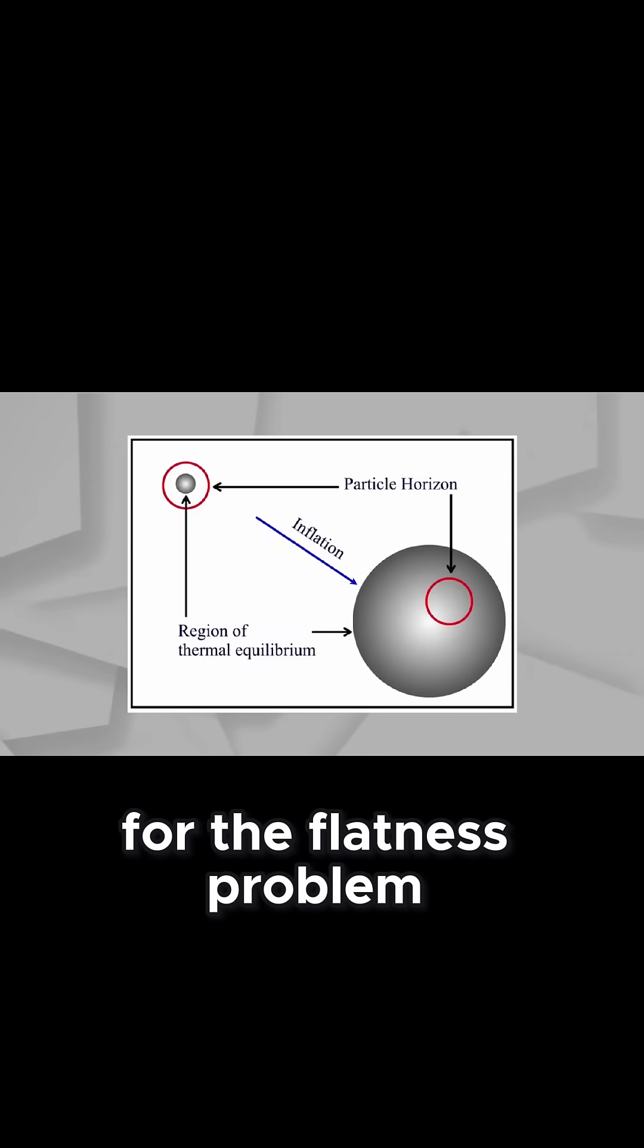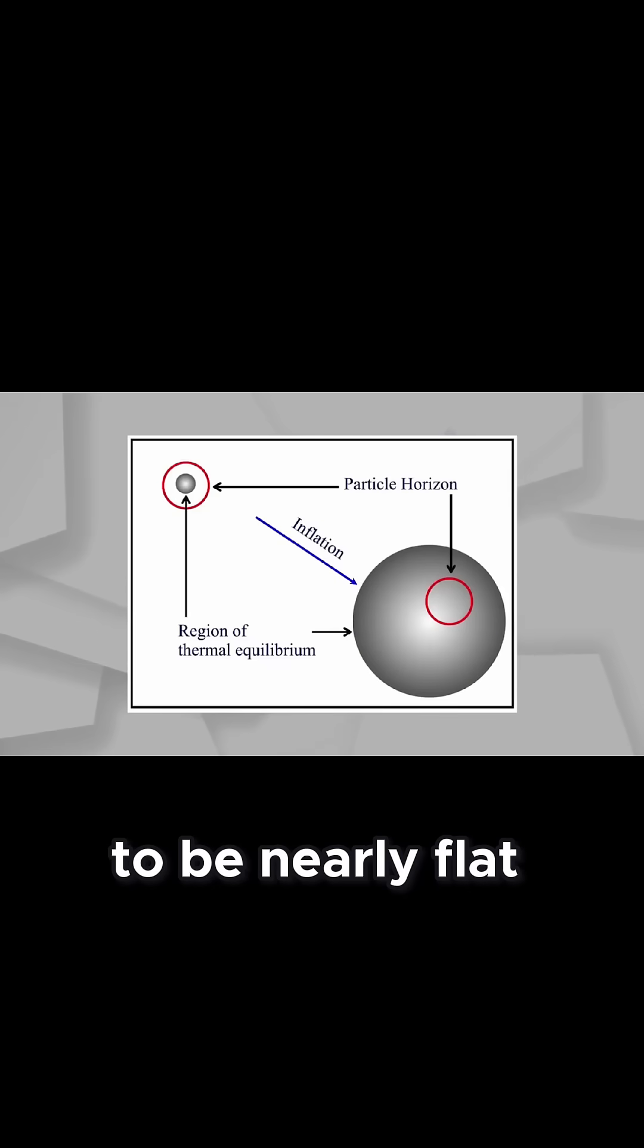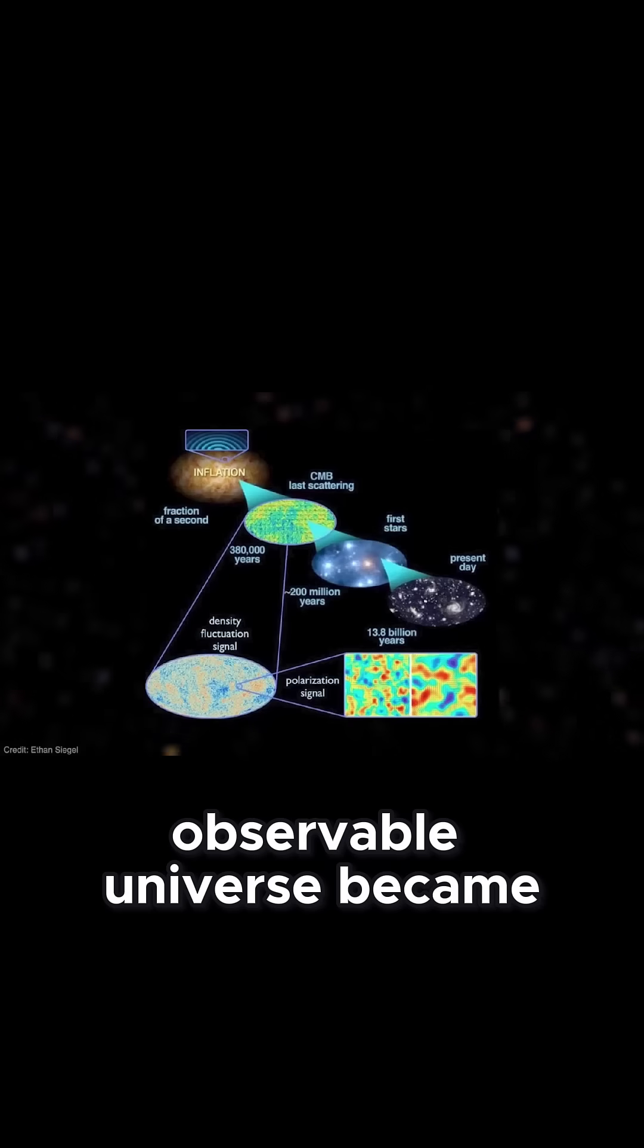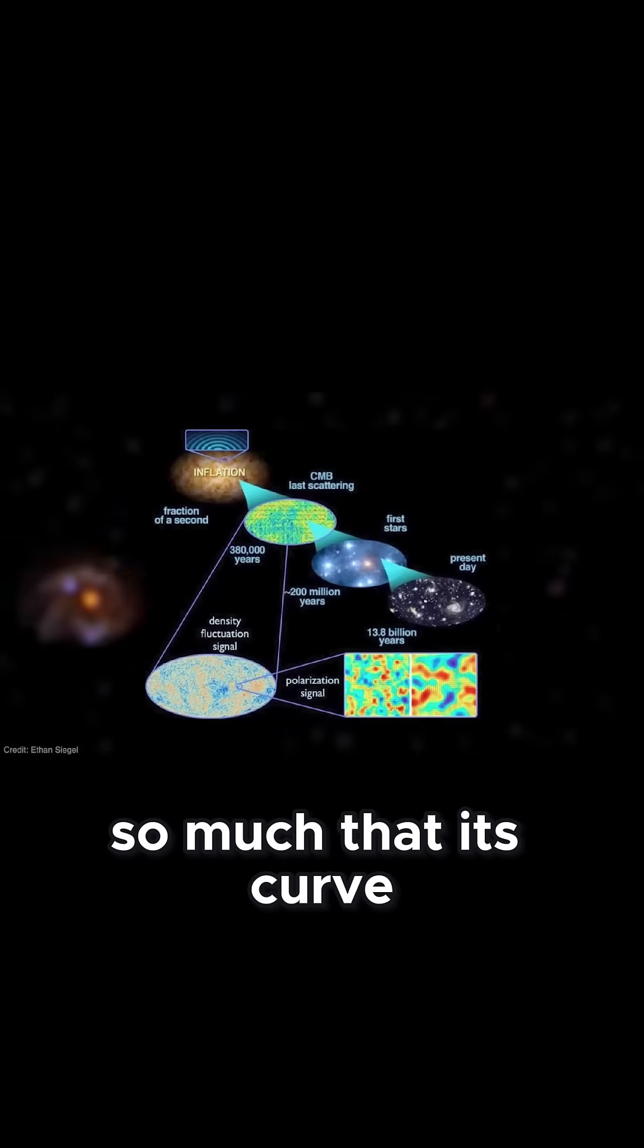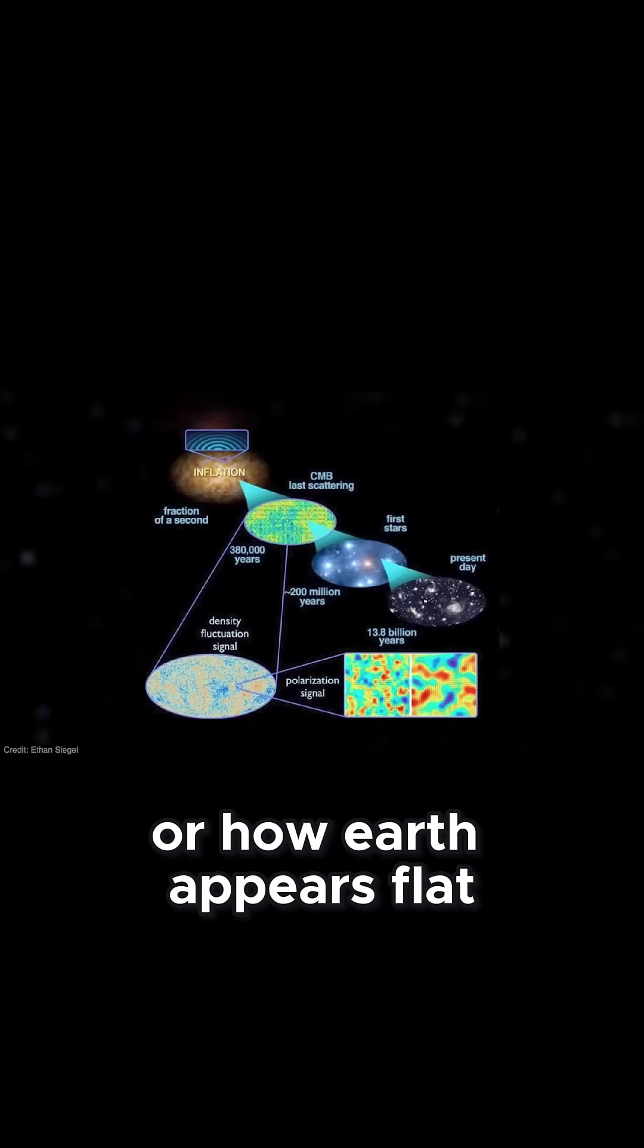For the flatness problem, inflation works similarly. It doesn't require the entire universe to be nearly flat. The rapid expansion stretched space so much that our observable universe became indistinguishable from flat geometry, like stretching a circle so much that its curve seems like a straight line, or how Earth appears flat locally.